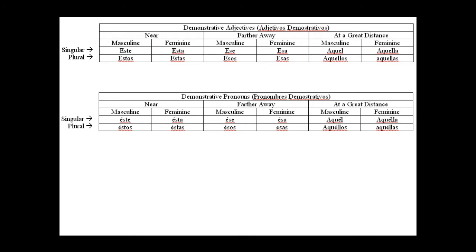If I want to say this comic strip is funny, I could say esta tira cómica es cómica. And then if I want to just say this one is funny, I would eliminate my noun, tira cómica, and say ésta with an accent mark over the e.